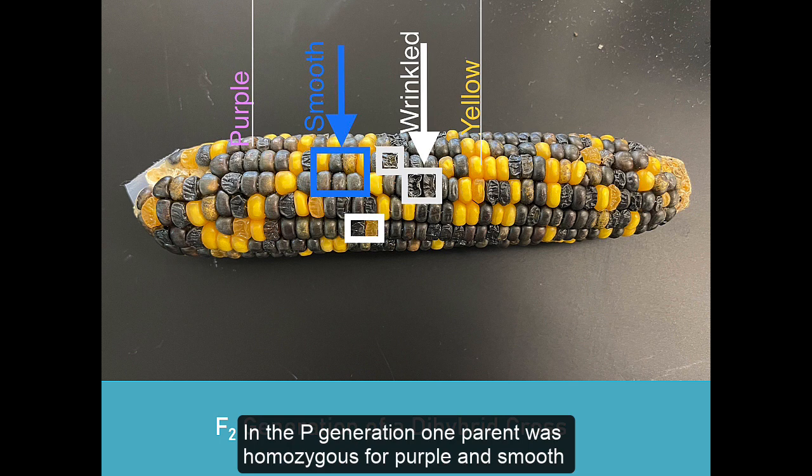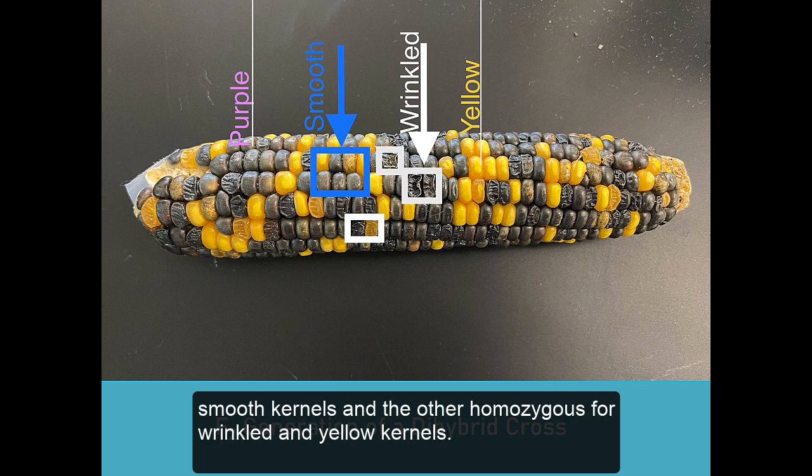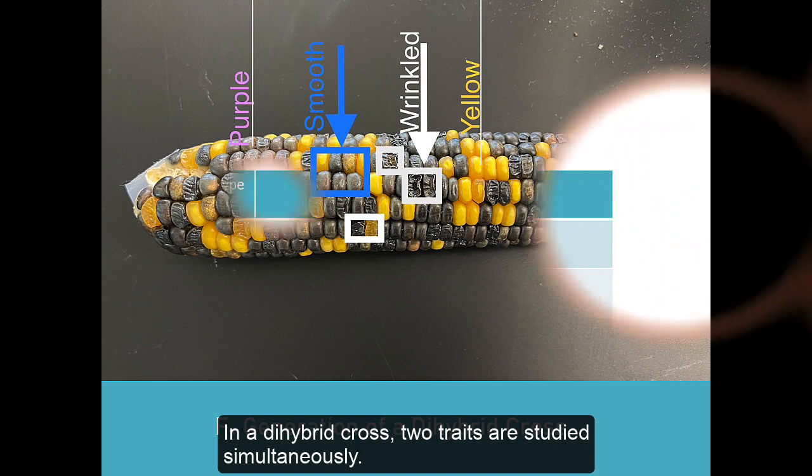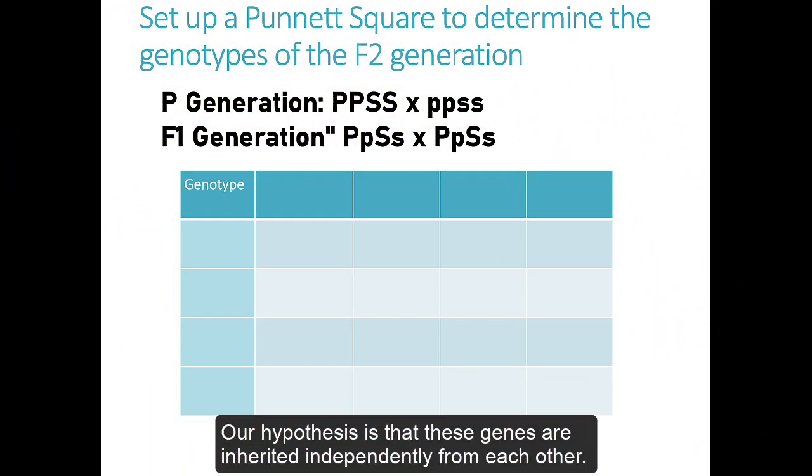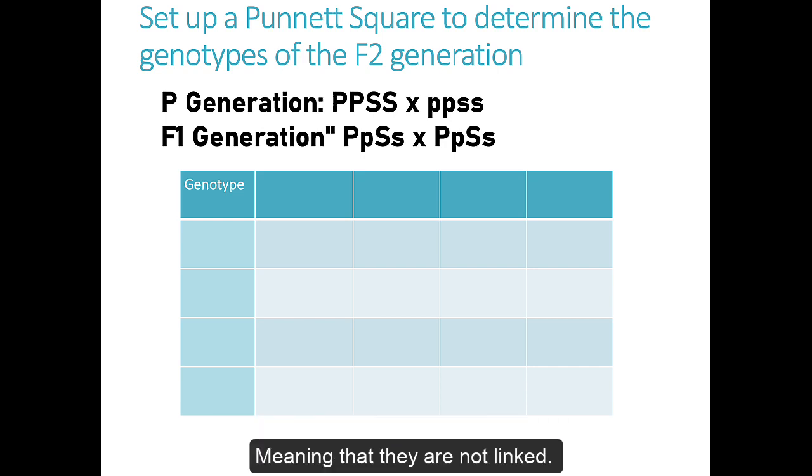In the P generation, one parent was homozygous for purple and smooth kernels and the other homozygous for wrinkled and yellow kernels. In a dihybrid cross, two traits are studied simultaneously. Our hypothesis is that these genes are inherited independently from each other, meaning that they are not linked.